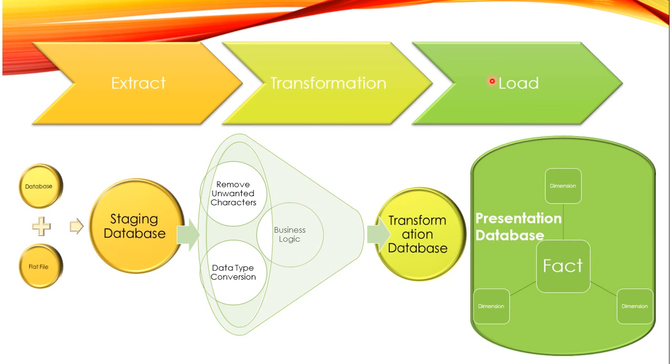In extract, we are loading data or reading data or extracting data from multiple databases and flat files. We combine all this data into a single staging database. Once our data is available in the staging database, then we perform transformation. In transformation we are filtering the data, removing unwanted characters, applying business logic, and applying data conversion.